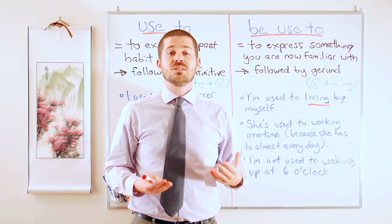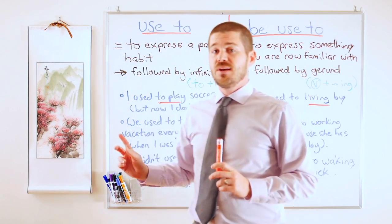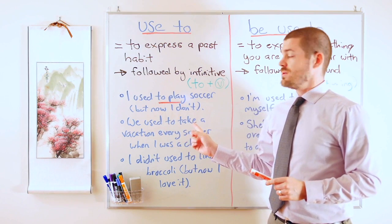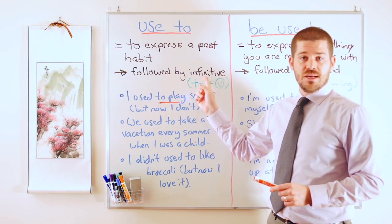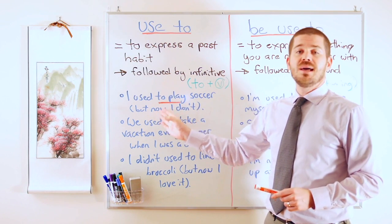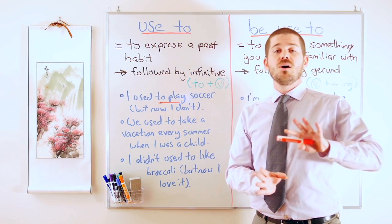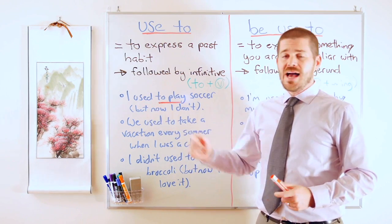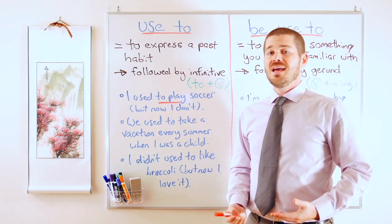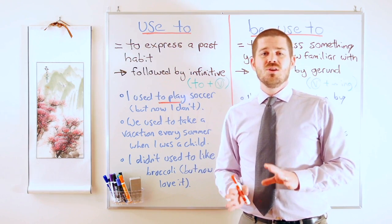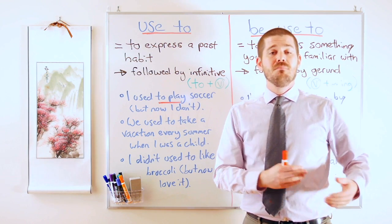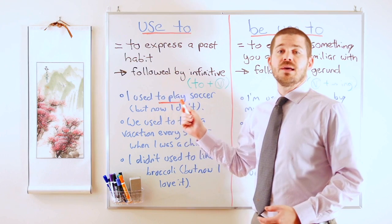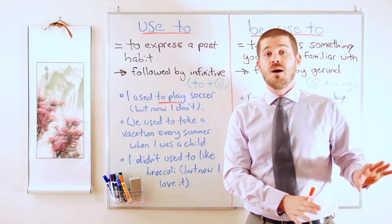Let's look at some examples. First: 'I used to play soccer but now I don't.' Notice 'to play' — that's our infinitive. This shows clearly that I played soccer in the past but now I don't. I could say 'I played soccer,' but that doesn't show it was a long time ago — maybe it was today or last week.